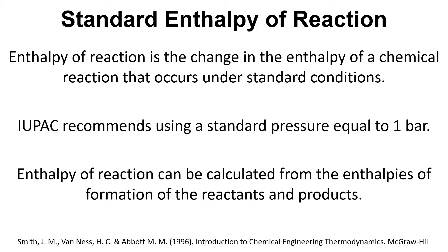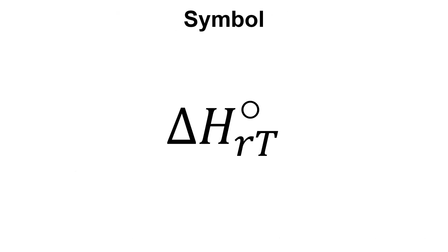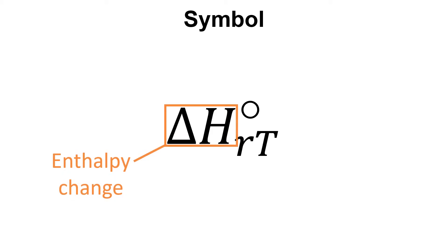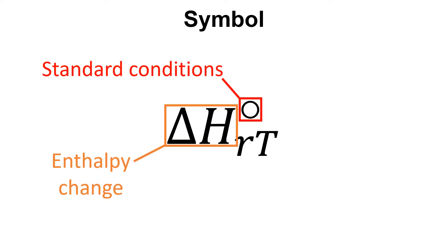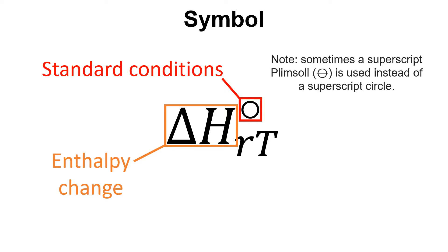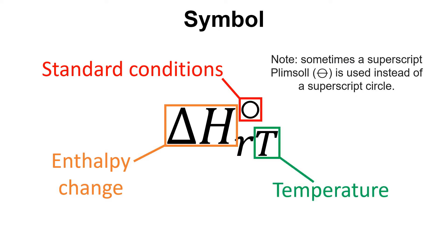Enthalpy of reaction can be calculated from the enthalpies of formation for the reactants and products. In terms of the symbol, we have delta H to represent enthalpy change, a superscript circle to represent standard conditions — although sometimes this is replaced with a superscript plimsoll — a subscript T for the temperature, and a subscript R to signify that this is the enthalpy change for a reaction.